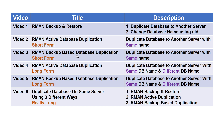Some people may want to use RMAN active database duplication or backup-based duplication to duplicate the database to another server but with a different name. For those, I have covered videos four and five. Video four is a replica of video two, but here we will duplicate the database to another server with both the same DB name and a different DB name. Since we will be duplicating it twice, this video will be slightly lengthy and is called long form. Similarly, video five covers the same scenario but using backup-based database duplication, and is also long form.